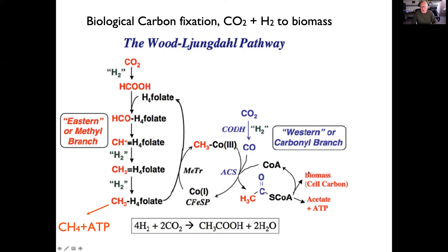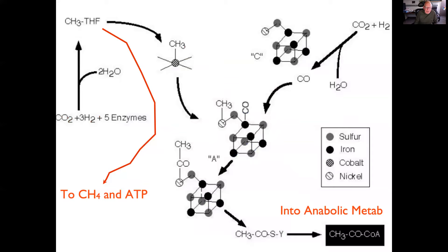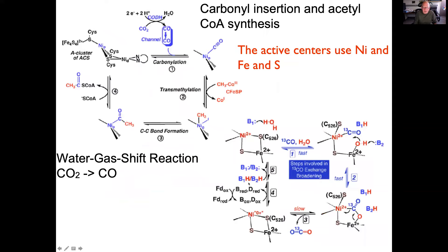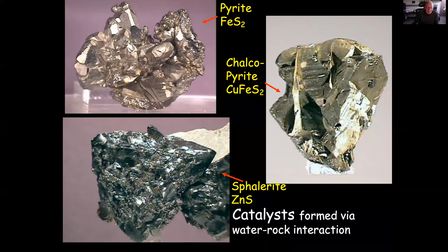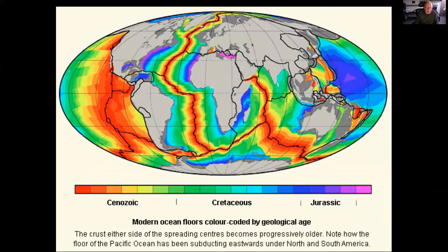The key active site of the acetyl-CoA synthetase complex is a nickel-iron-sulfur cluster — a ferredoxin with a nickel hanging off the side. This cluster first carbonylatess the iron, then a methyl group on a cobalt cofactor is transferred to the nickel center where the carbonyl insertion reaction occurs, allowing the product to go on to form biomass. In the absence of methanogens, Earth did provide catalytic opportunities in the form of transition metal sulfides — pyrite, chalcopyrite, and sphalerite.